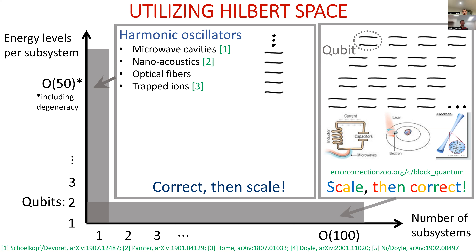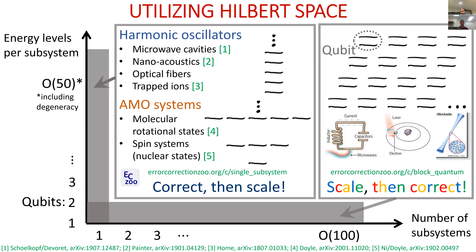What some others are doing is trying to use the extra space in a single subsystem. Given some amount of control, it's possible to do so — it's not science fiction. At least some of the levels can be utilized in a controllable way. The types of systems amenable to this treatment are, for the most part, harmonic oscillators — a euphemism for continuous variable state space with continuous position and momentum, modeling optical fibers, phononic or photonic modes. There's also rising AMO systems: atoms, molecules, and nuclear spin states.